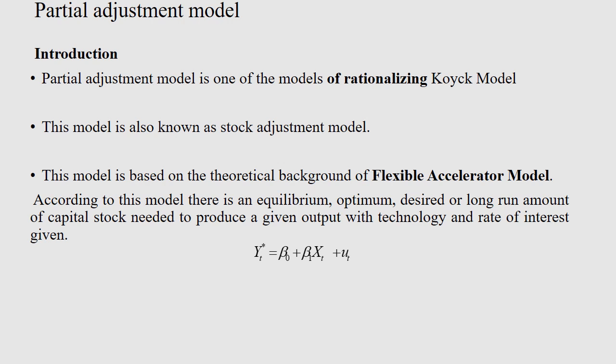After certain modification and adjustment, the final adaptive expectation model derived is: yt = gamma * beta_naught + beta_1 * gamma * xt + beta_1 * (1 - gamma) * yt_minus_1 + vt. In the adaptive expectation model, the adjustment was done on the right-hand side, that is in the independent variable. In the case of partial adjustment, the rationalization will be done by taking assumptions on the left-hand side, that is in the dependent variable y. This model is also known as the stock adjustment model, and it has a theoretical background known as the flexible accelerator model.